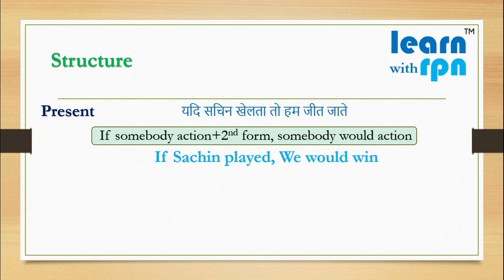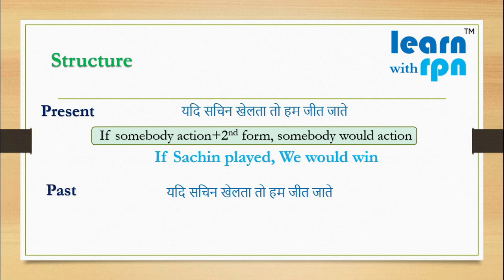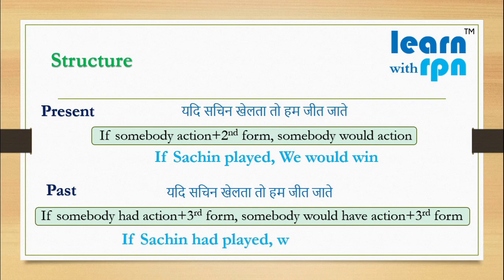दोस्तों, आज मुझे पिछले साल का मैच याद आ गया, जब हम सचिन के ना खेलने के कारण हारे थे. उस दिन भी, यदि सचिन खेलता, तो हम जीत जाते. The sentences are same, but feeling is now related to the past. Structure for past conditional: If somebody had action (third form), somebody would have action (third form). As per structure: If Sachin had played, we would have won.